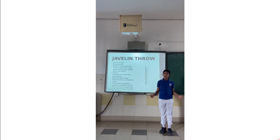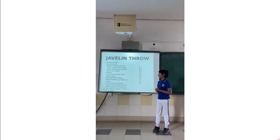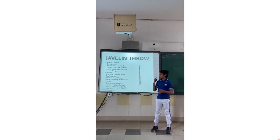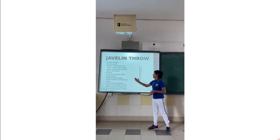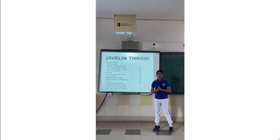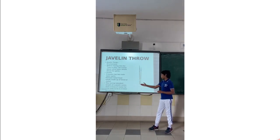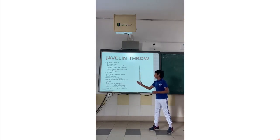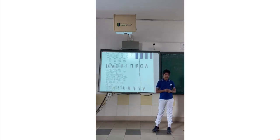Before moving into how to play, let us know some basic details about the Javelin. The Javelin has two main basic parts: first, the pointed metal head; and second, the shaft made up of wood or metal. The standard length of the Javelin varies from 2.6 to 2.7 meters for men and 2.2 to 2.3 meters for women.